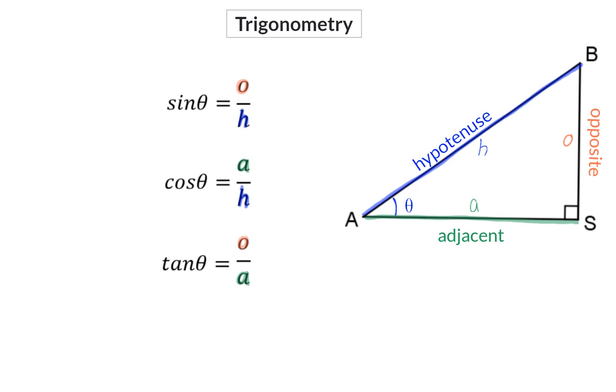As long as the angle stays constant, these simplified ratios will always stay constant for any sized triangle. In the next video, we are going to have a look at how we determine these ratios for specific triangles.